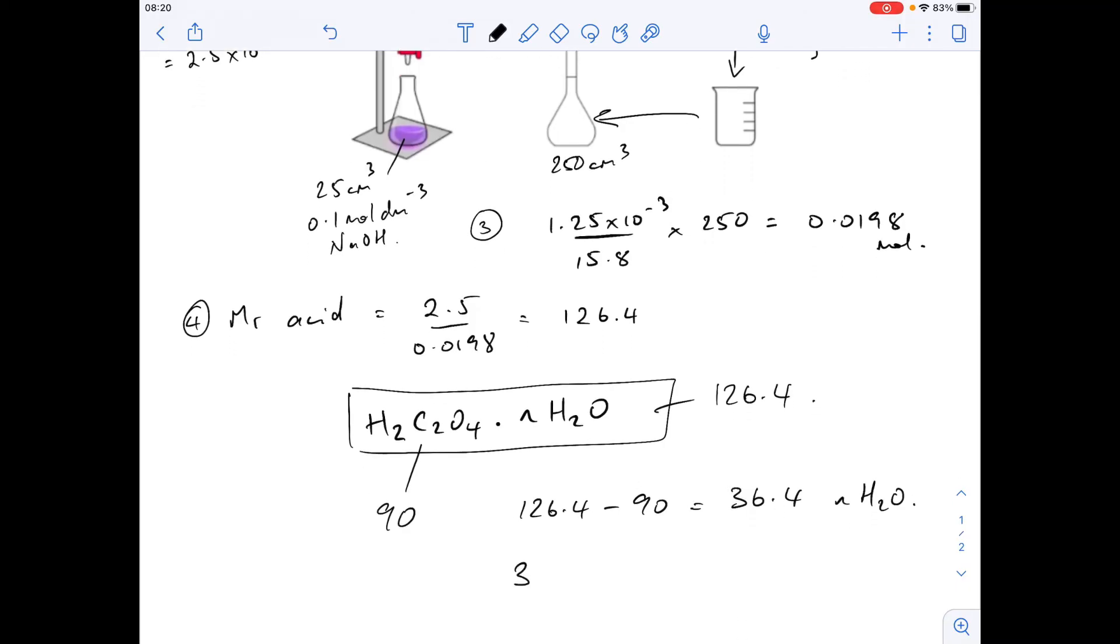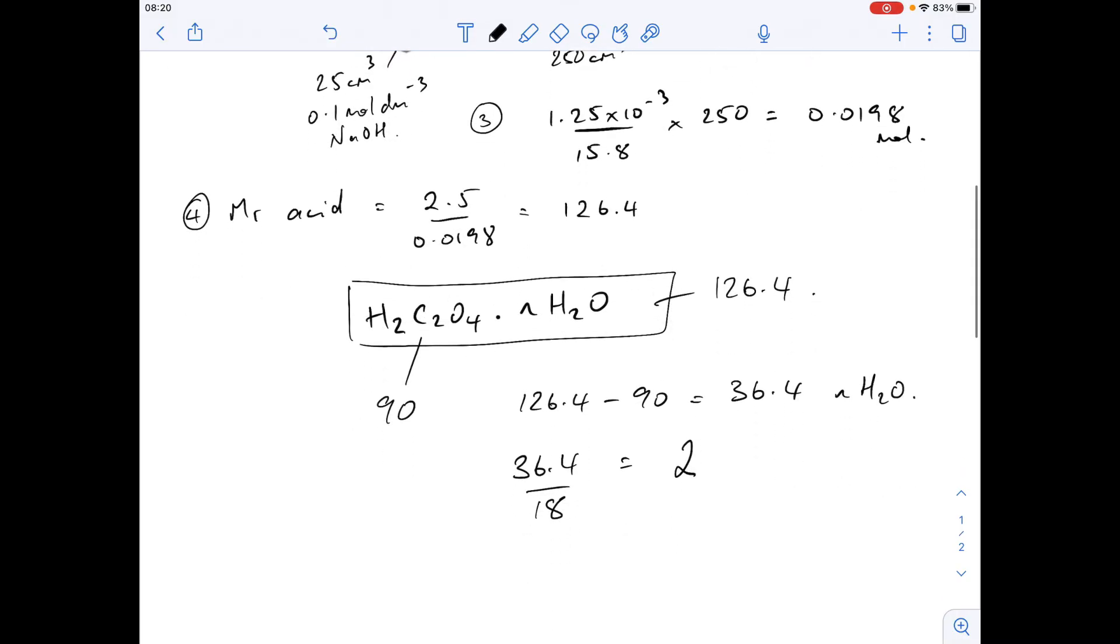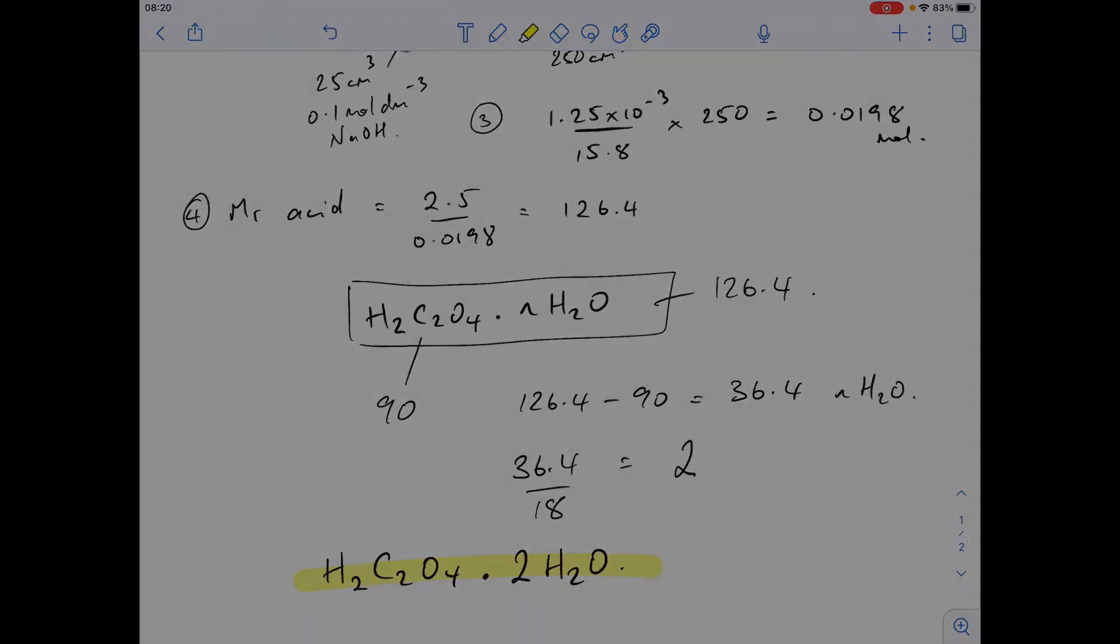So if we then take 36.4 divided by the MR of 1 water, which is 18, to the nearest whole number, we're going to get 2. So the formula of the acid is H₂C₂O₄·2H₂O.